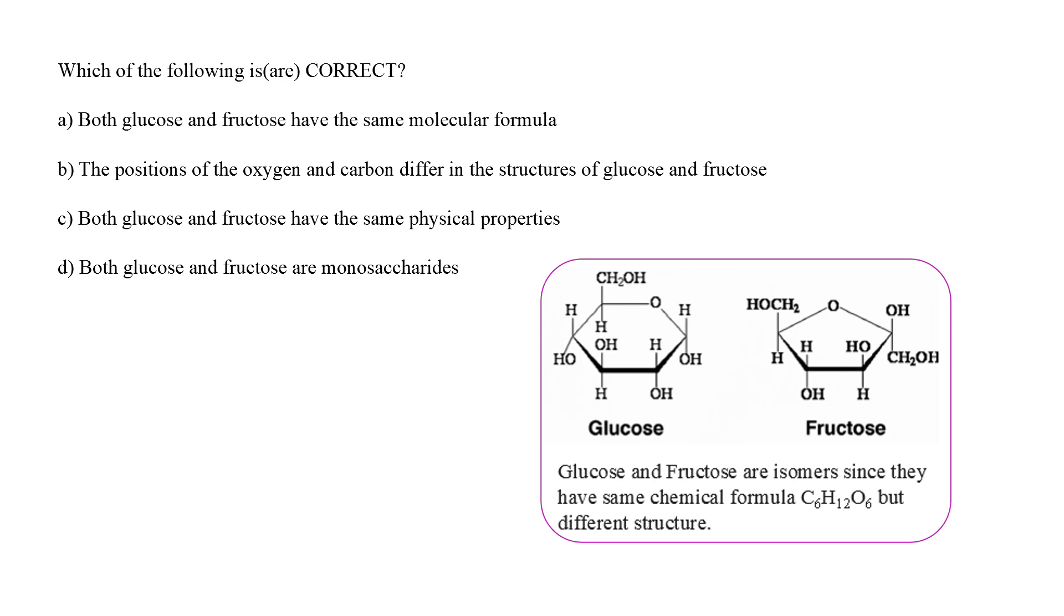Option D. Both glucose and fructose are monosaccharides. Yes, a monosaccharide is any sugar that cannot be hydrolyzed any further to give a simpler sugar. Sugars such as oligosaccharides, on the other hand, can be hydrolyzed further to give simpler sugars. For example, sucrose, lactose, maltose, etc. Therefore, options A, B and D are correct in this question.